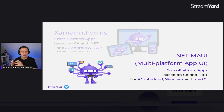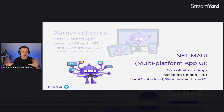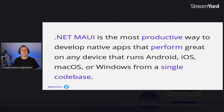.NET MAUI is the new product for cross-platform apps based on C# and .NET — now for iOS, Android, Windows, and macOS as first-class citizens. You can see macOS jumped to the big list. We no longer mention UWP; we now just say Windows because UWP is deprecated and it's now based on WinUI. If you're coming from Xamarin.Forms, the outside APIs are about 95% the same, so the transition should be really easy. .NET MAUI is the most productive way to develop native apps that perform great on any device running Android, iOS, macOS, or Windows from a single codebase.